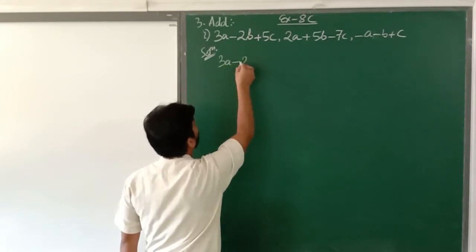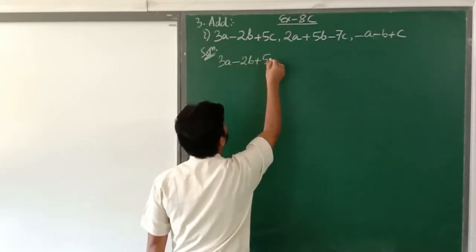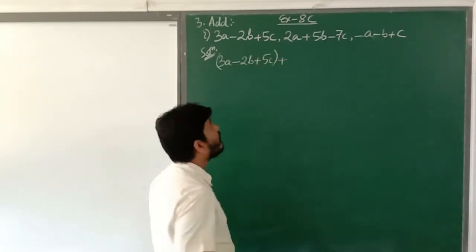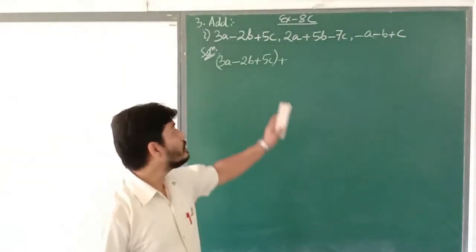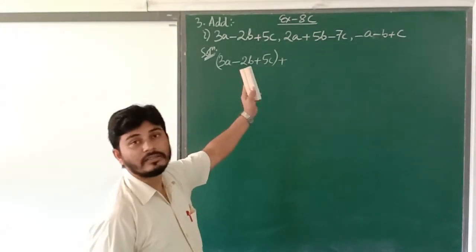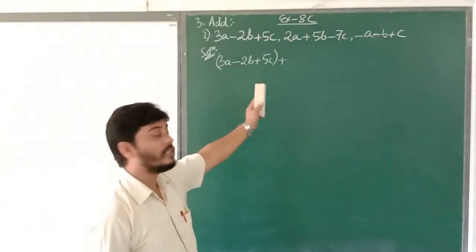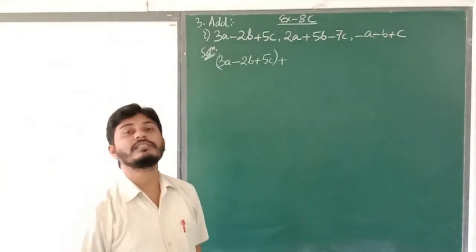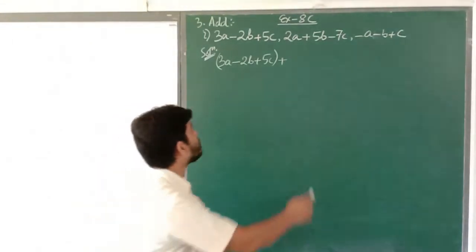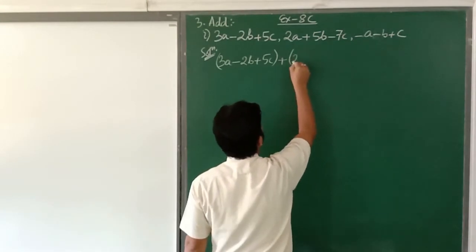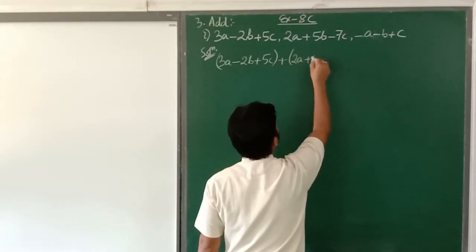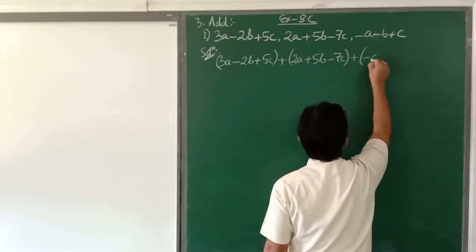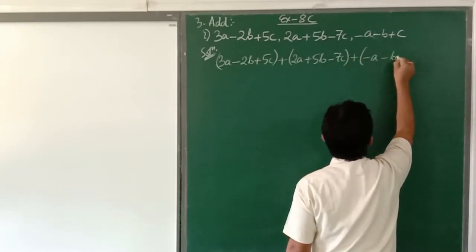Wherever there is a comma, you have to write plus. Since we have to add, each expression you put inside a bracket: (3a minus 2b plus 5c) plus (2a plus 5b minus 7c) plus (minus a minus b plus c).